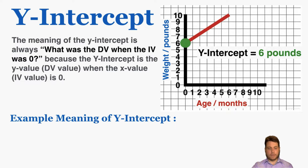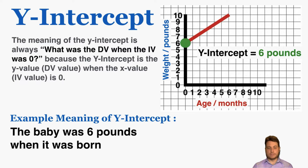Going back to the graph of the baby's weight per age, I can see that the y-intercept is six pounds, which means that when the baby was zero months old, the weight was six pounds. A more everyday way of saying that is: when the baby was born, it weighed six pounds. That's the physical real-world meaning of the y-intercept.